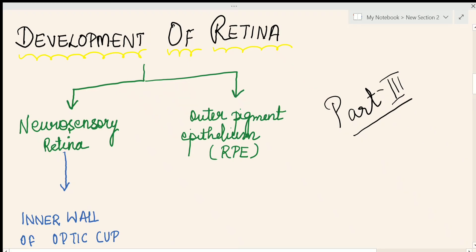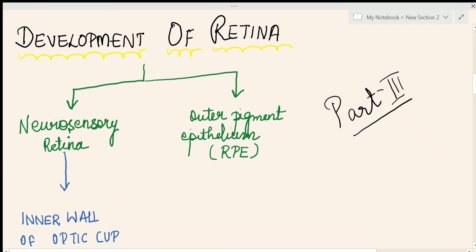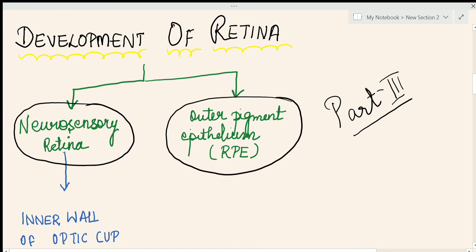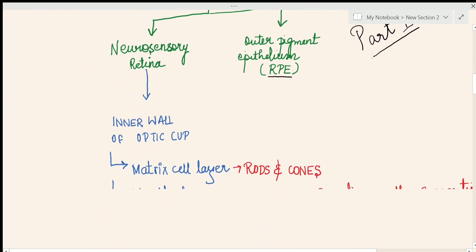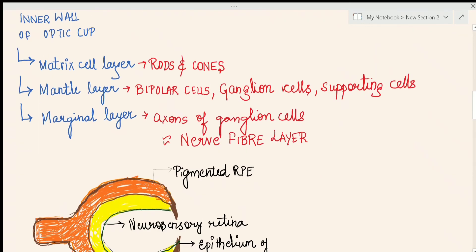Now let us talk about part 3 of the development of the eye — that is the development of the retina. The retina is divided into two parts: the inner part, which is the neurosensory retina, and the outer pigmented epithelium, which is also called the retinal pigment epithelium (RPE) or the outer pigment epithelium. Let us see how and from where they are formed.